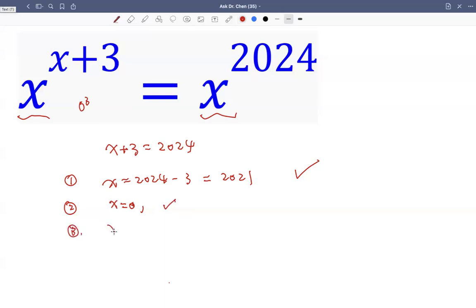Now let's try x equals 1. If x equals positive 1, we have 1 raised to 1 plus 3 on the left-hand side. Does that equal the right-hand side, 1 raised to 2024? Yes, 1 raised to 4 is 1, and 1 raised to 2024 is 1.